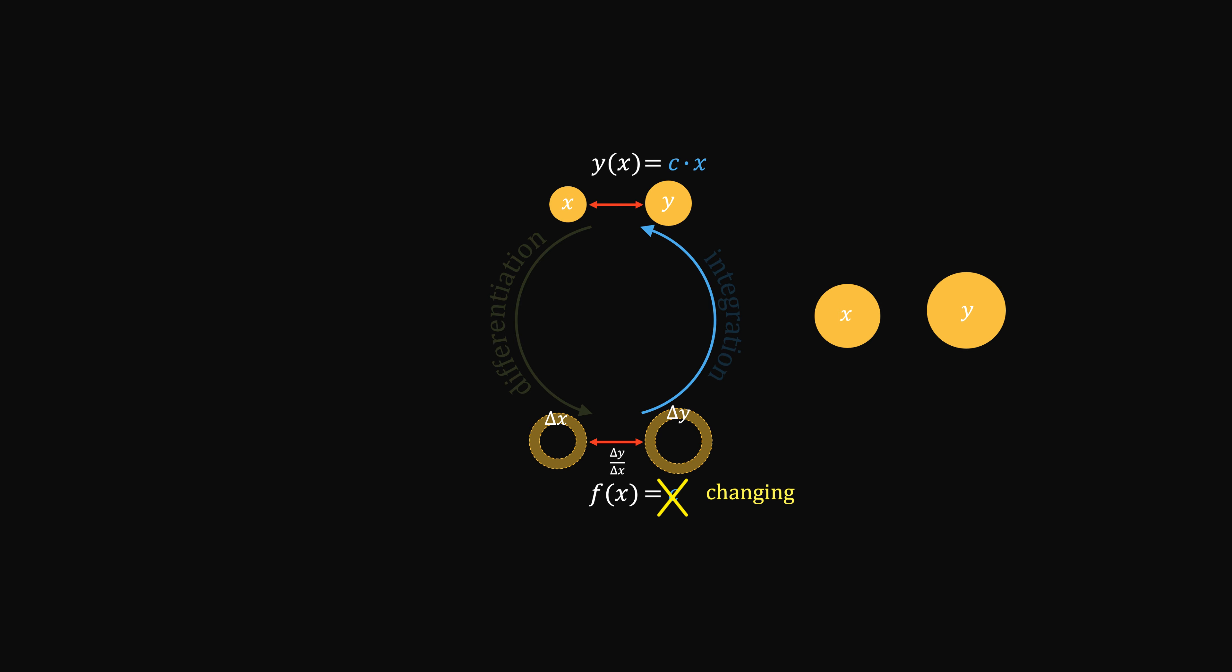But when x is large, same amount of change will induce a larger change in y. So the velocity is also changing with x. But as long as it's not randomly changing, we can still get the relationship. It just won't be this simple.